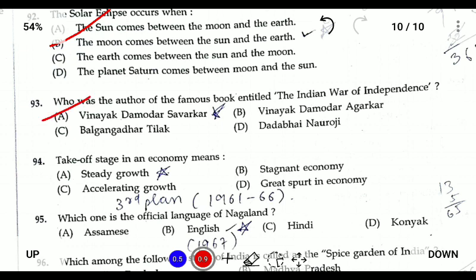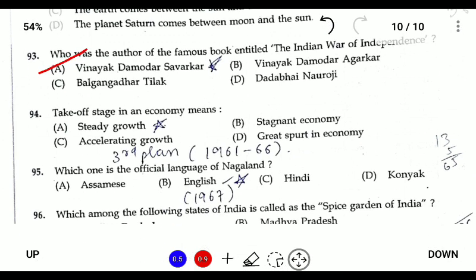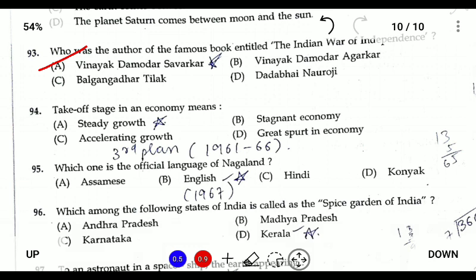Question ninety-four: the 'take-off stage,' which represents steady growth, was started in the Third Five-Year Plan, which ran from 1961 to 1966.